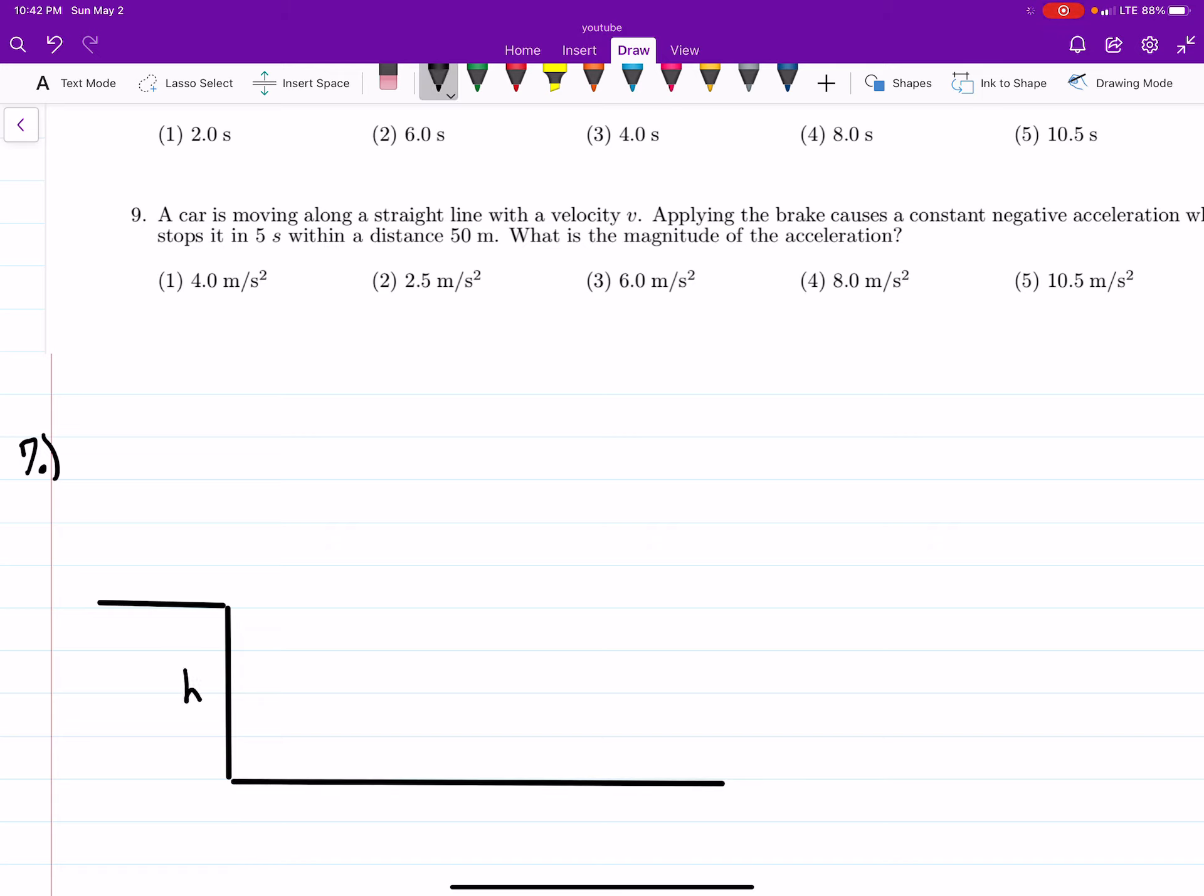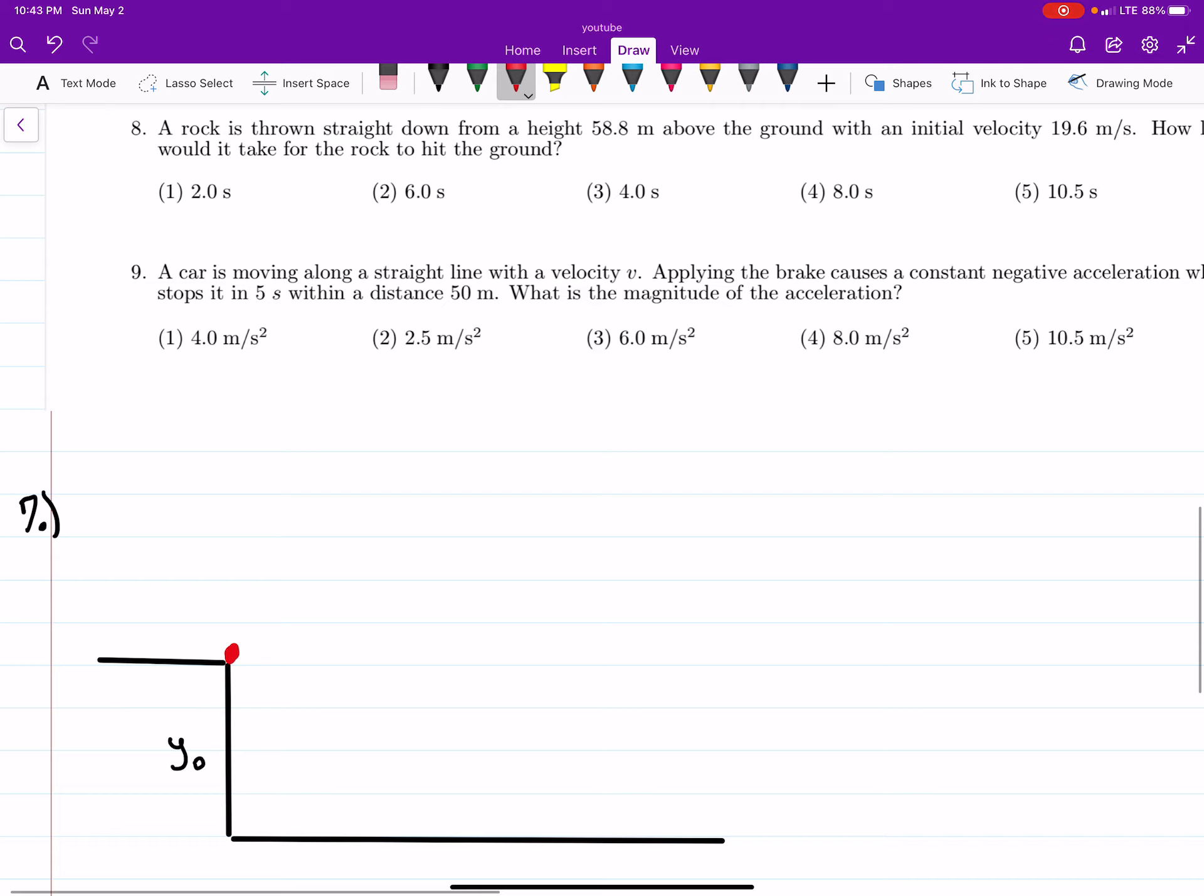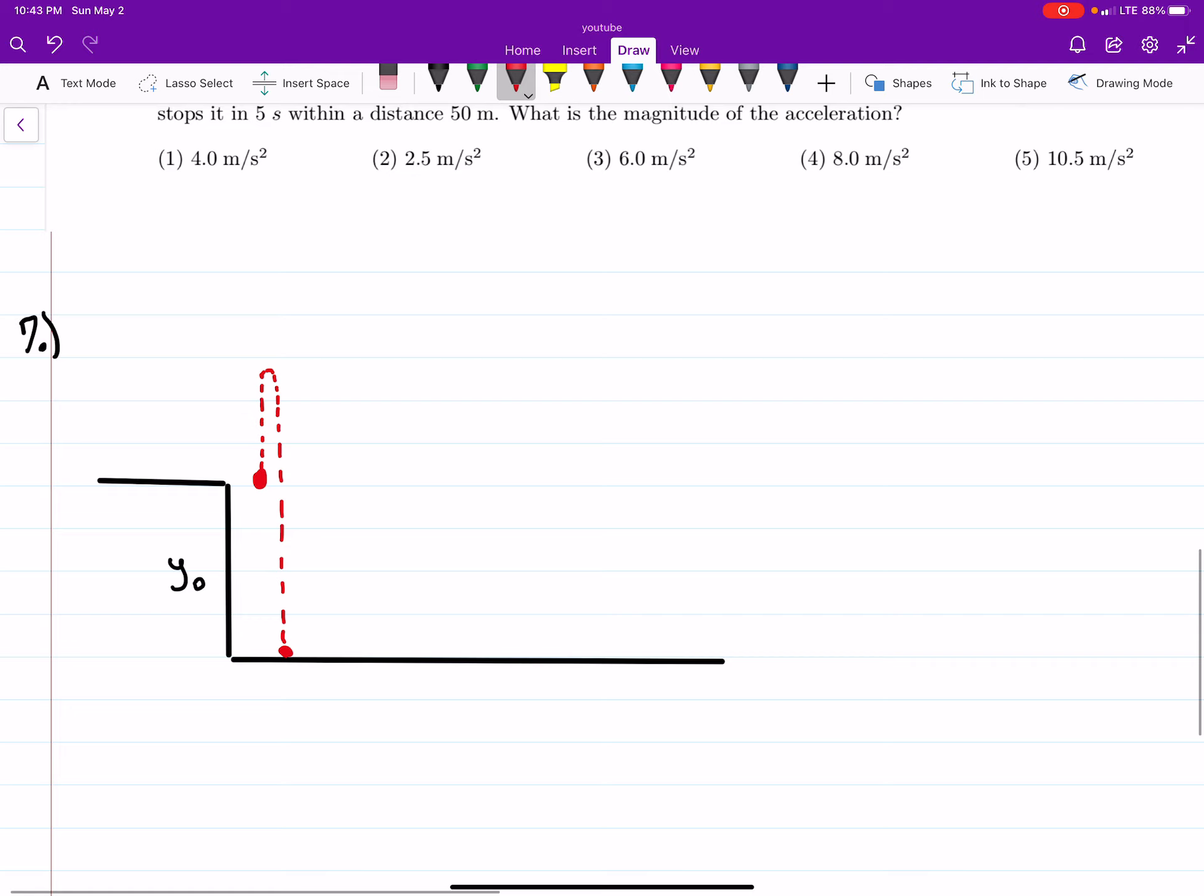So I'm going to call this height Y-naught, the initial height. And this ball is being thrown straight up, so I'll actually move it over a little here. Straight up, it reaches some max, and it comes down. And this is the ground right here. This level is the ground. So that's kind of our setup.